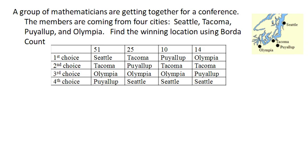Next we're going to look at a method called Borda Count. Imagine we have a group of mathematicians getting together for a conference, and they're coming from Seattle, Tacoma, Puyallup, and Olympia, and they want to choose a location. They go ahead and vote, and here are their preferences in the schedule. Notice that if we were to go with the plurality method here, the winner would be Seattle, with a majority — Seattle has a majority of first place votes out of the 100 votes.